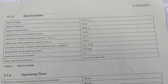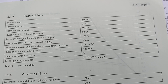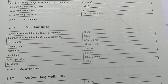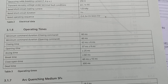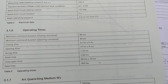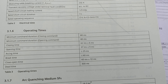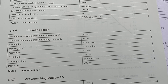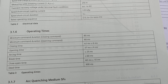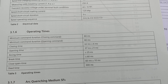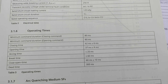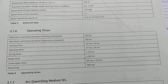Rated short circuit duration is 3 seconds, rated operating sequence open – 0.3 second close open – 3 minute close open. Minimum command duration opening command 80 ms, closing time 62 ms ±6 ms, opening time 37 ms ±4 ms, arcing time less than 25 ms, breaking time less than 60 ms, close open time 60 ms ±10 ms, and dead time 300 ms.